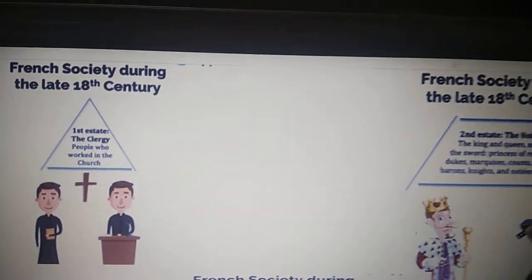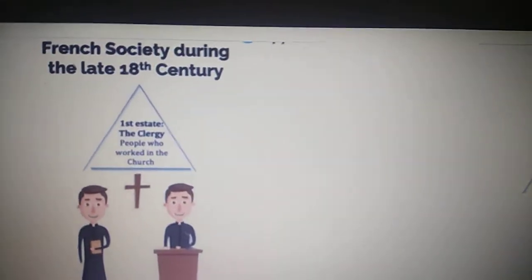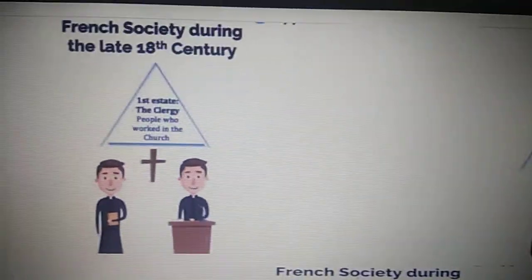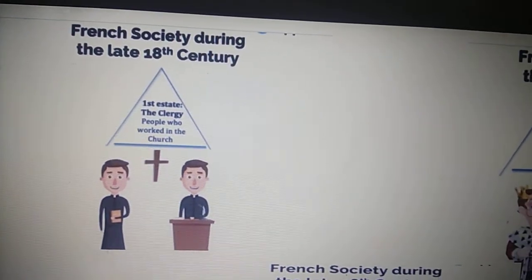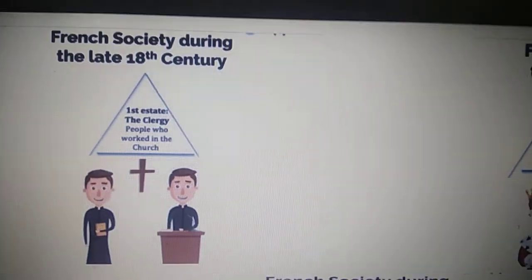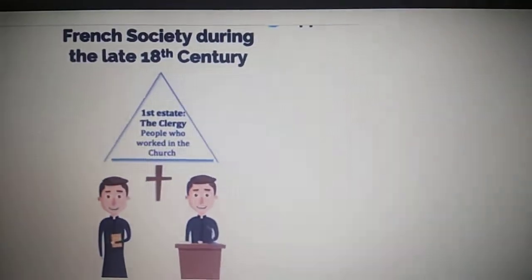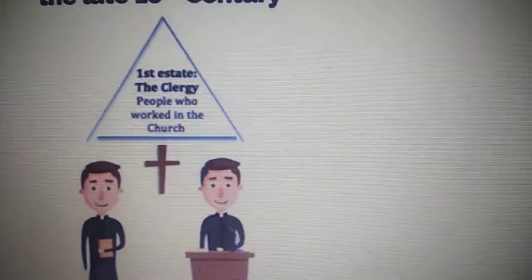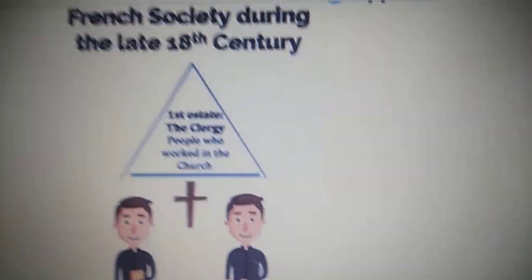We had learned in the French Revolution that the French society during the late 18th century was divided into a state system in the form of a hierarchy. The first state was the clergy — the people who worked in the church.